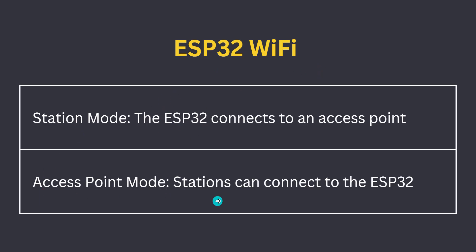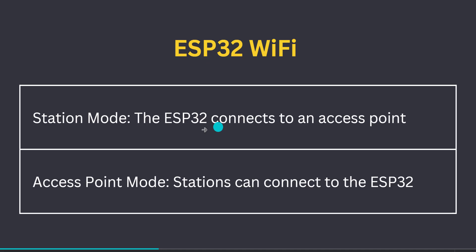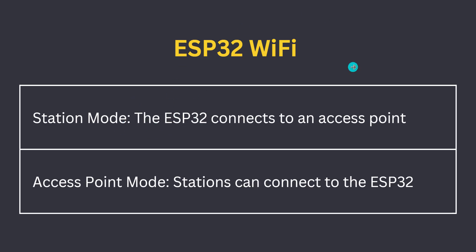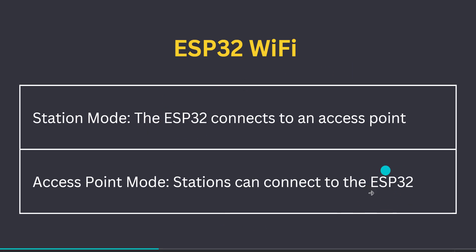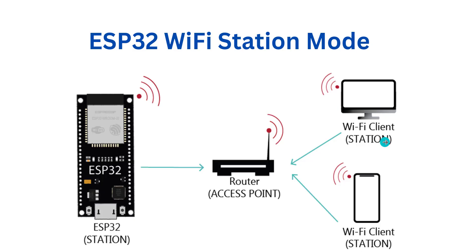Whereas in Access Point mode, ESP32 will be acting as an Access Point, and other computers, mobile phones — all these stations will connect to this ESP32. Whereas ESP32 in Station mode connects to the Access Point and gets internet access. In Access Point mode, we connect various stations to the ESP32.